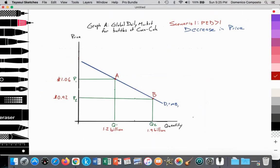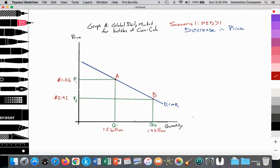So continuing from using some of the data from that previous video, here we have graph A, the global daily market for bottles of Coca-Cola. We have our price measured on the y-axis and the quantity on the x-axis. We have our downward sloping demand curve labeled D1 equal to the marginal benefit. We have a price set at $1.06 per bottle, or P1, with a quantity of consumption at Q1, or 1.2 billion units on a daily basis. And then we have our lowered price at $0.92 at P2, with a quantity demanded at 1.9 billion per day, being the quantity demanded at Q2.